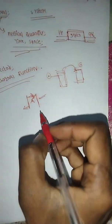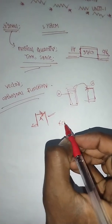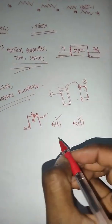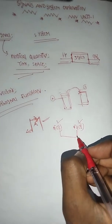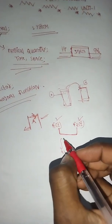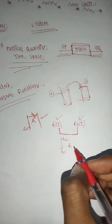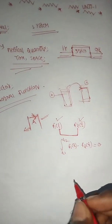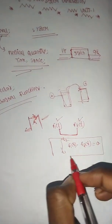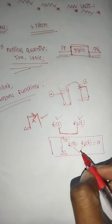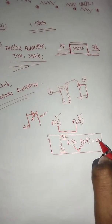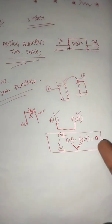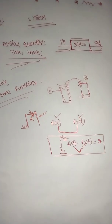Next are orthogonal functions. We have two functions: F1 and F2. When two functions within a time interval are multiplied and the result is equal to zero, these are called orthogonal functions.